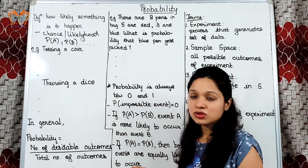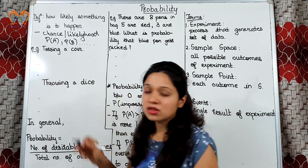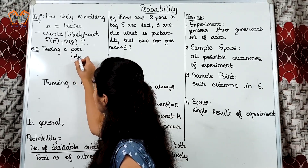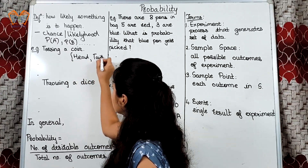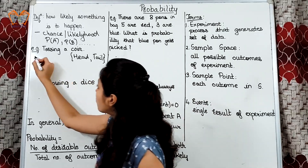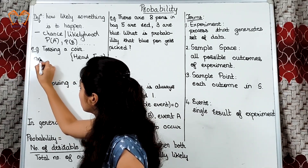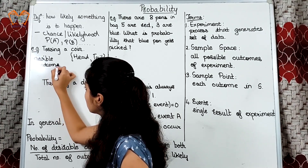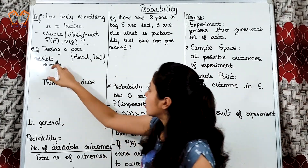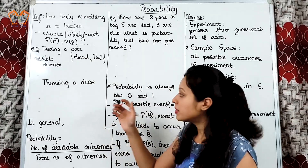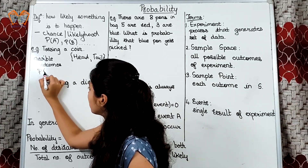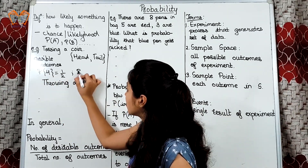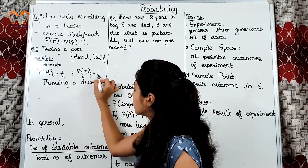Let us see two examples based on the definition. First, tossing a coin. You know, whenever a coin is tossed, we either get head or tail. That means these are two possible outcomes. So, probability of getting head or probability of getting tail — probability of head will be 1 by 2, and probability of tail will be 1 by 2.